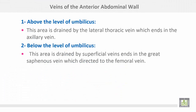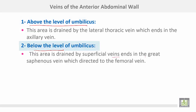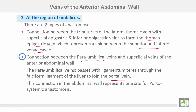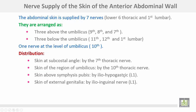The veins of the anterior abdominal wall: above the umbilicus, the area is drained by the lateral thoracic vein, which ends in the axillary vein. Below the umbilicus, this area is drained by superficial veins into the great saphenous vein directed to the femoral vein. At the region of the umbilicus, there are two types of anastomoses: a connection between tributaries of the lateral thoracic vein with superficial epigastric and inferior epigastric veins to form the thoracoepigastric vein, linking superior and inferior vena cava; and a connection between paraumbilical veins and superficial veins of the anterior abdominal wall. The paraumbilical veins pass with the ligamentum teres through the falciform ligament of the liver to join the portal vein, representing a portosystemic anastomosis.